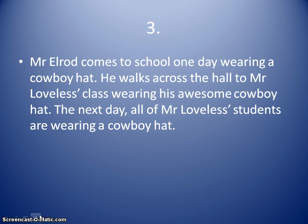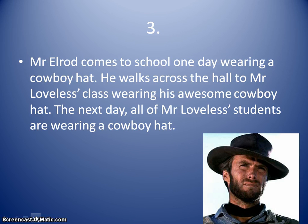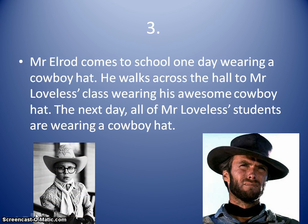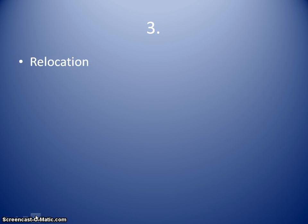The next example: Mr. Elrod comes to school one day wearing a cowboy hat. He walks across the hall to Mr. Loveless' class — Mr. Loveless is the teacher who teaches across the hall — and wears his awesome cowboy hat into the room. The next day, all of Mr. Loveless' students are also wearing a cowboy hat. That would be an example of relocation diffusion because I moved across the hallway. Because of the fact that I walked across the hallway to Mr. Loveless' class and they saw it because of my movement — that would be relocation diffusion.